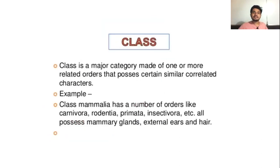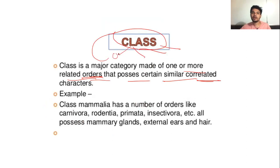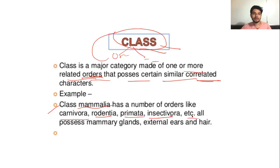Then class. Class is a major category made by one or more related orders that possess certain similar co-related characters. Closely related orders will be in one class. One example is class Mammalia, which has a number of orders like Carnivora, Rodentia, Primata, and Insectivora, etc. All members of class Mammalia possess mammary glands, external ears, and hairs.